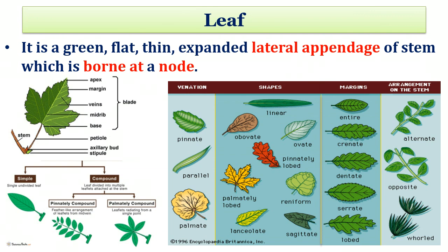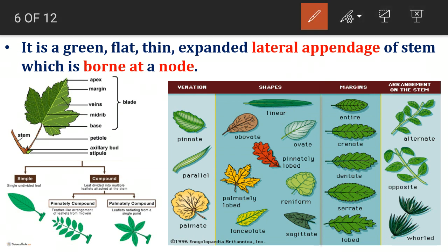Next is leaves. Leaves are green, flat, thin, expanded lateral appendages of the stem which are borne at the node. While studying a leaf, the important characters to be noted are: apex, margin, veins, midrib, base of leaf, petiole and stipule.